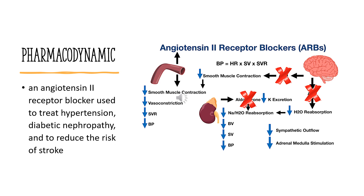Pharmacodynamics. The pharmacodynamic effects of azulsartan medoxomil are mediated by its active metabolite, azulsartan. Azulsartan inhibits the pressor effects of an angiotensin-2 infusion in a dose-related manner. Like other ARBs, azulsartan causes a dose-dependent decrease in peripheral resistance and decreases smooth muscle vascular tone.